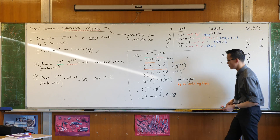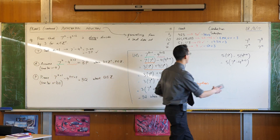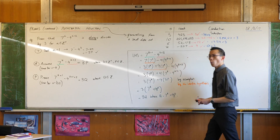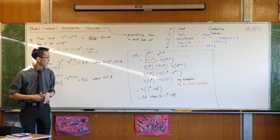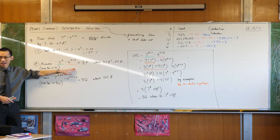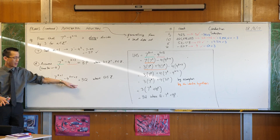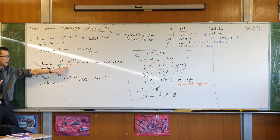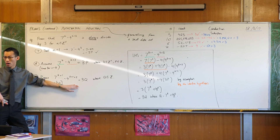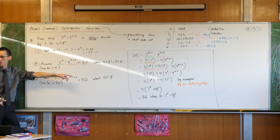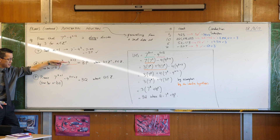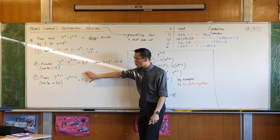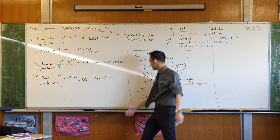So what have I achieved? Let's stand back and look at the entire thing. What I've achieved is: if there's some value where these things work, then you can show that it works for the next value. Suppose it's true for k being 100 — that means I can use that fact to prove it for 101. But if it's true for 101, that means it's true for 102 as well. And if it's true for 102, you can use that to prove it for 103, and so on forever. So if it's true somewhere, anywhere, it will be true for all subsequent numbers, because that's what this proof shows us.